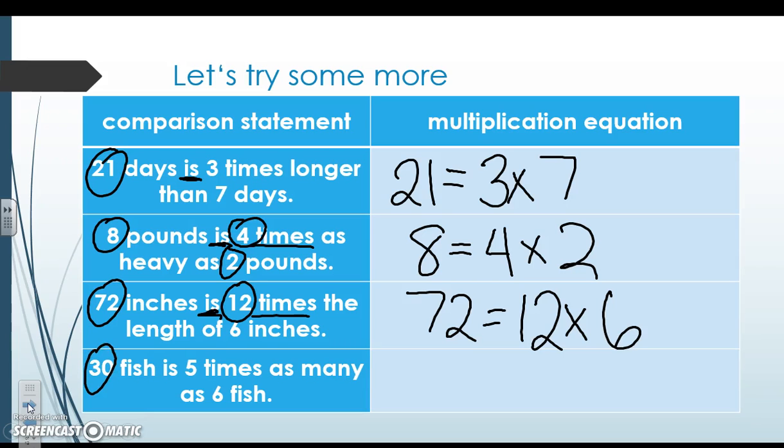72 is 12 times the length of six inches. Let's try another one. 30 fish is equal sign five times as many as six fish.